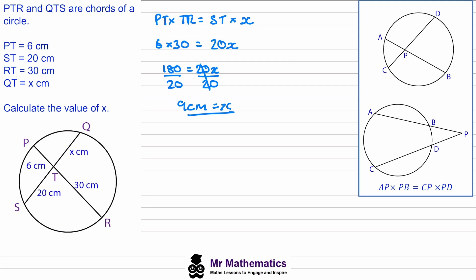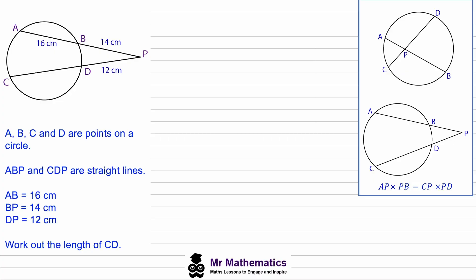Okay. If we look at our second example, we've been told that A, B, C and D are points on a circle. ABP and CDP are straight lines. AB is 16, BP is 14 and DP is 12. We've been asked to work out the length of CD, which is in this chord here.